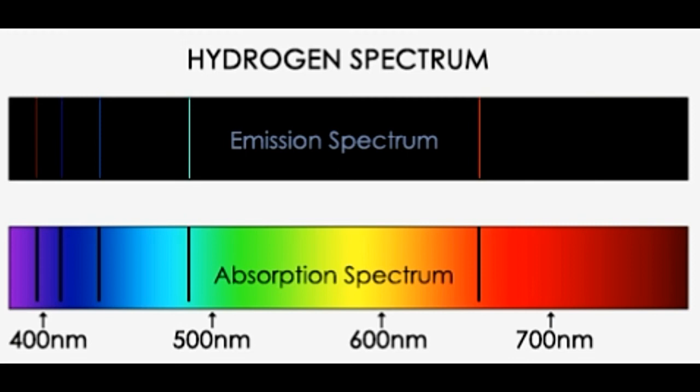Absorption spectra can be measured in terms of their frequency, wavelength, or wave number. There are two types of absorption spectra: atomic absorption spectrum and molecular absorption spectrum. Atomic absorption spectrum is the spectrum obtained when free atoms, generally gases, absorb wavelengths of light. Molecular absorption spectrum, on the other hand, is the spectrum seen when molecules of a substance absorb wavelengths of light, generally ultraviolet or visible light.